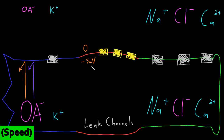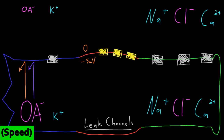The same is not going to be true for the other ions, because the neuron membrane has channels called leak channels or leakage channels. These channels allow ions to pass across the membrane, although how easily each ion can cross varies considerably. These leak channels are open all the time — they are not gated, so they're not opening and closing in response to any stimulus.